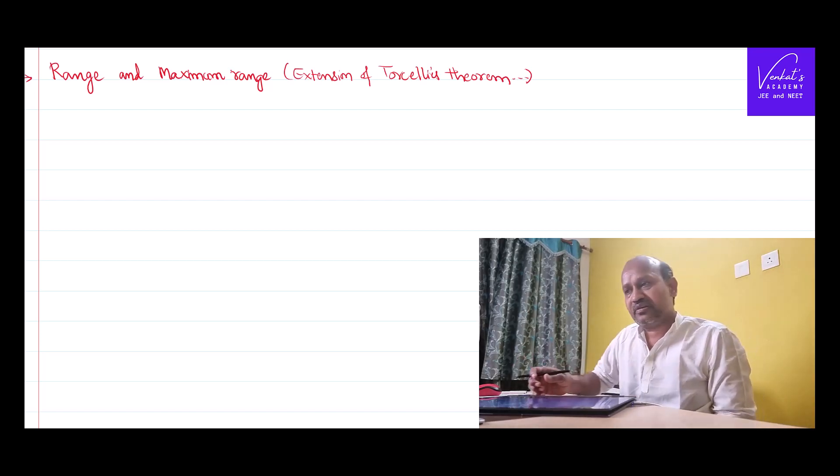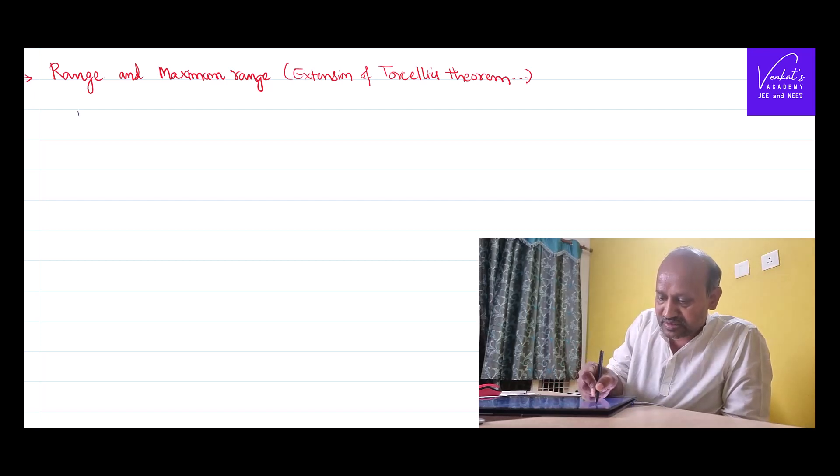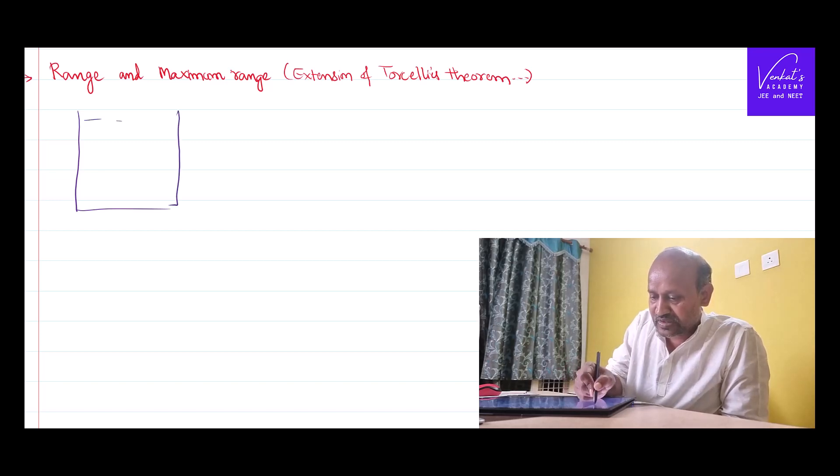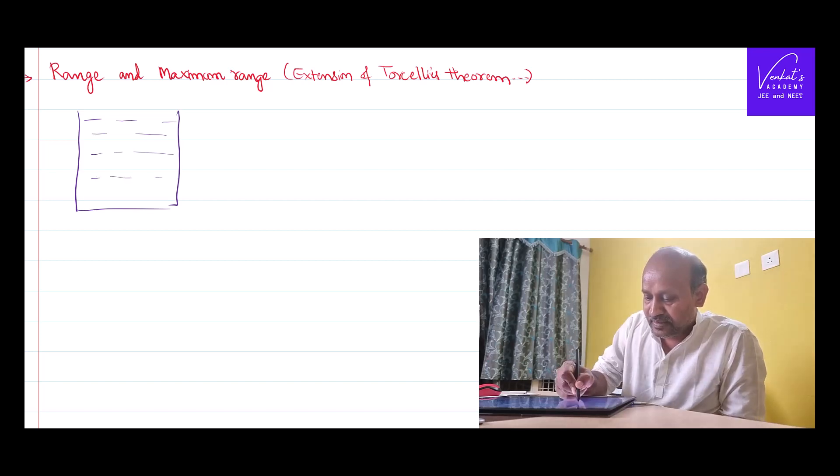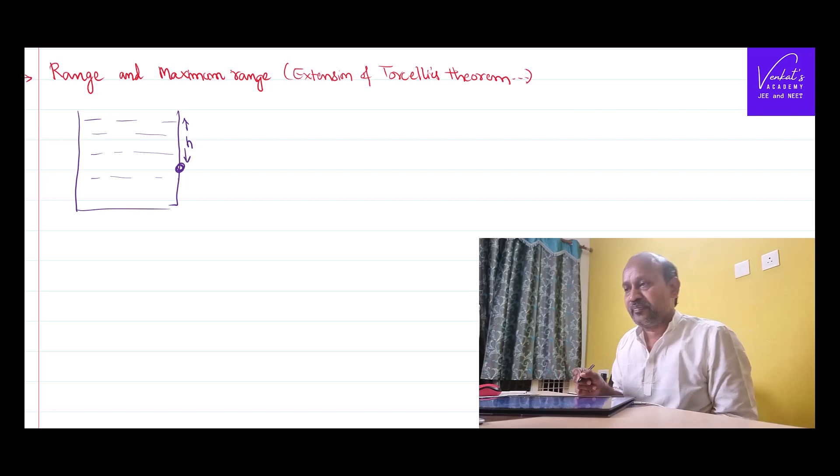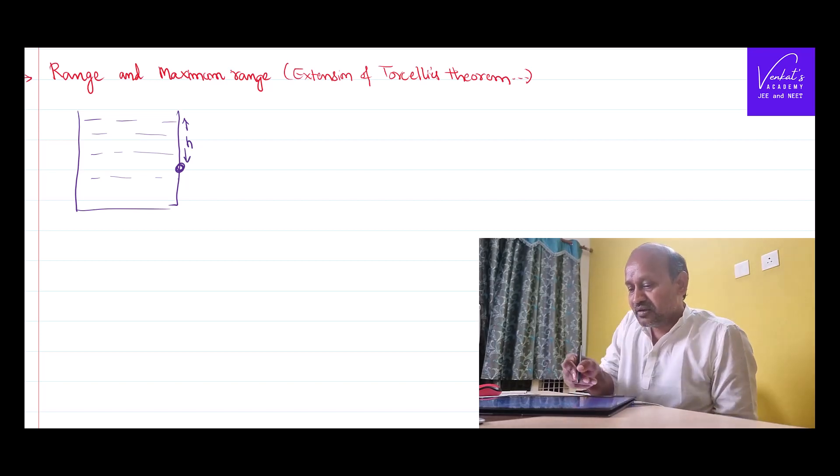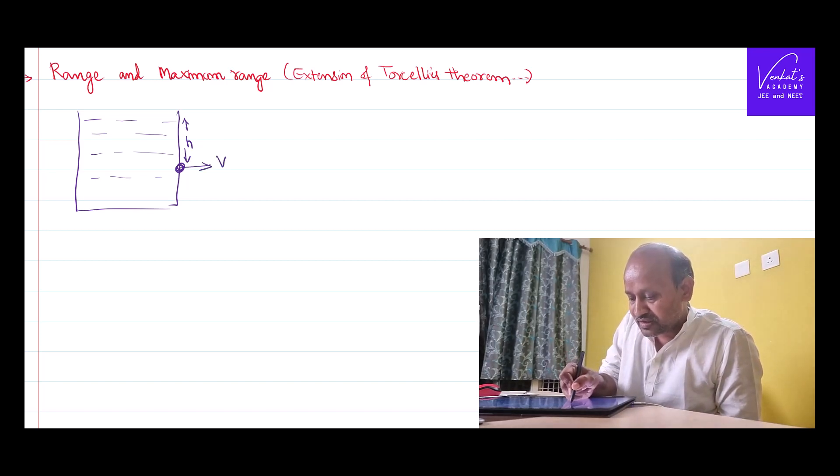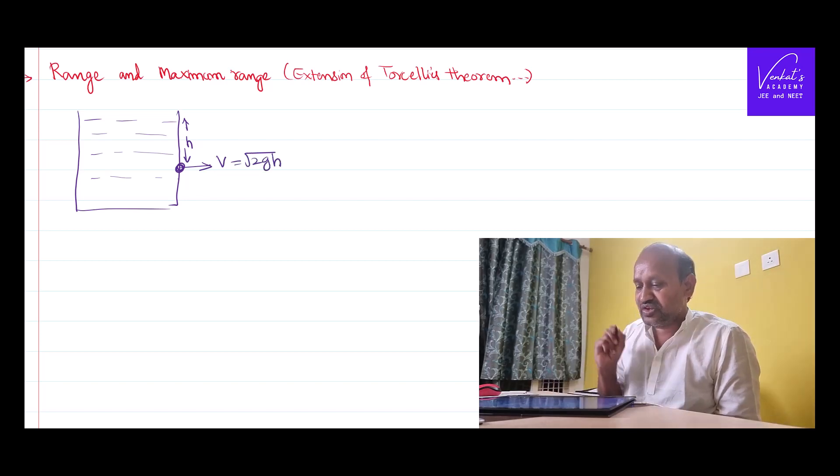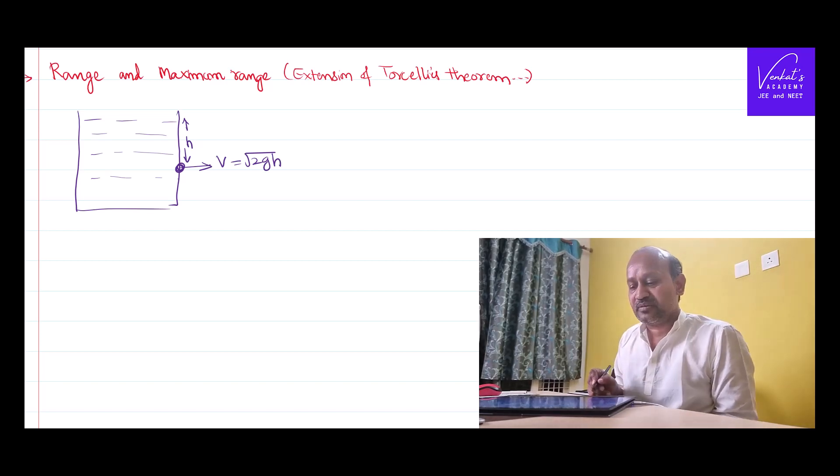Let me tell you what we have done in the previous video. We have considered a vessel filled with some liquid. It has a small opening at a height h from the top. As it is an opening, the fluid leaks out from there with a velocity and we found that velocity is root 2gh. That we are taking from the previous video.